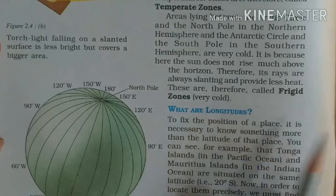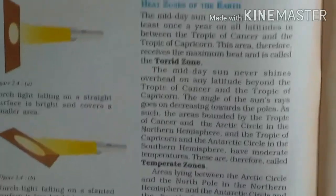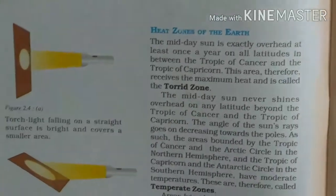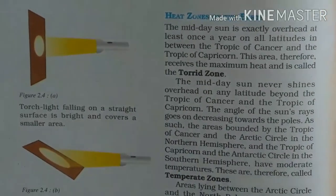Frigid means very cold. So here is the heat zone of the Earth.